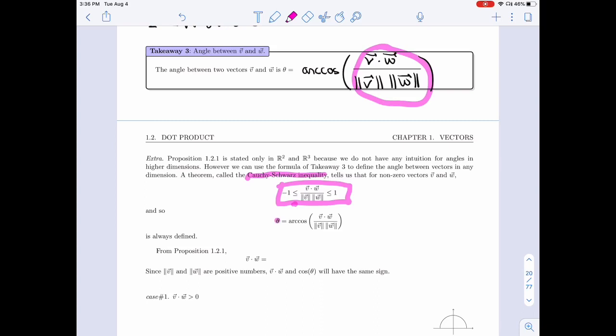And so we can define this angle for any vector in the same dimension. So we don't need them to be in R2 and R3 to define the angle that way. So this is what we'll mean when we talk about the angle between two vectors in R25.